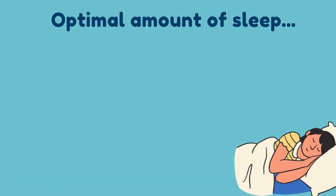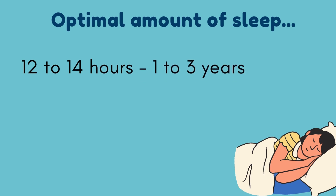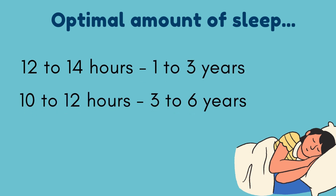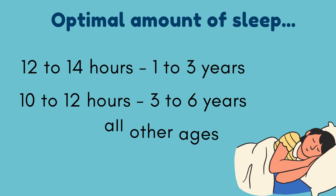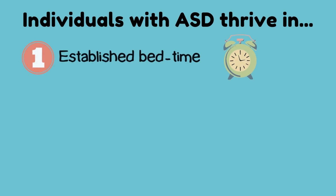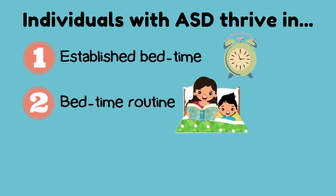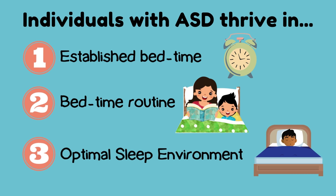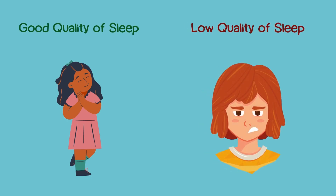In general, a high quality of sleep is found to be 12 to 14 hours of sleep per day for ages 1 to 3, 10 to 12 hours for ages 3 to 6, 10 to 11 hours for ages 7 to 12, and 10 hours for all other ages. Individuals with ASD thrive in routine settings, and having an established bedtime, bedtime routines, and a comfortable sleep environment can positively benefit the individual. Better sleep isn't going to get rid of the symptoms associated with autism, but it will help reduce the symptoms associated with ASD.